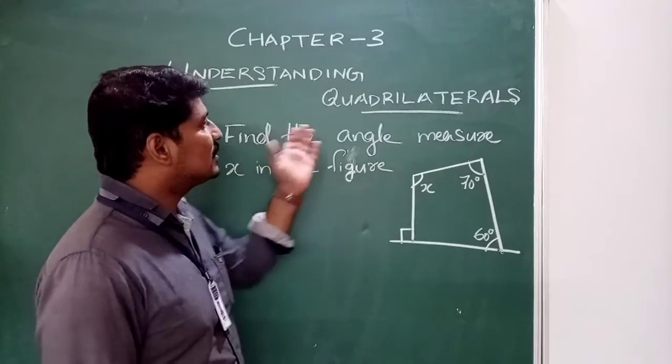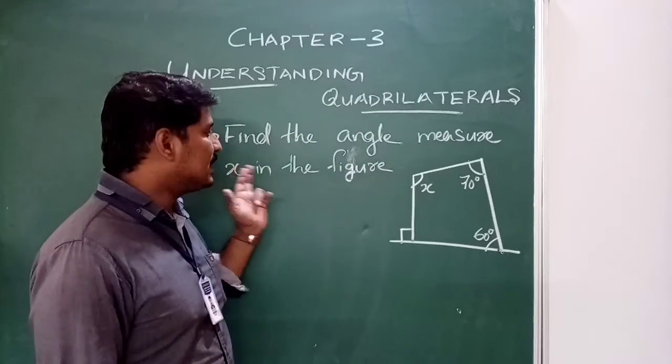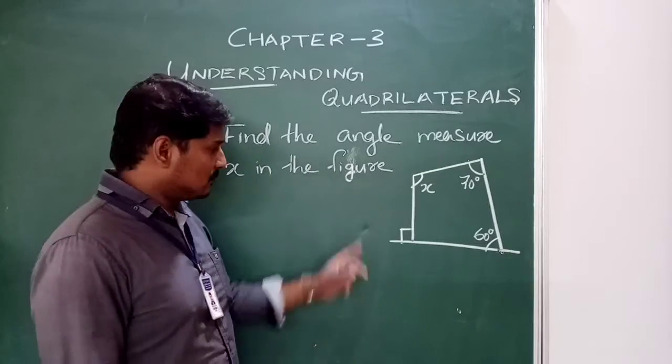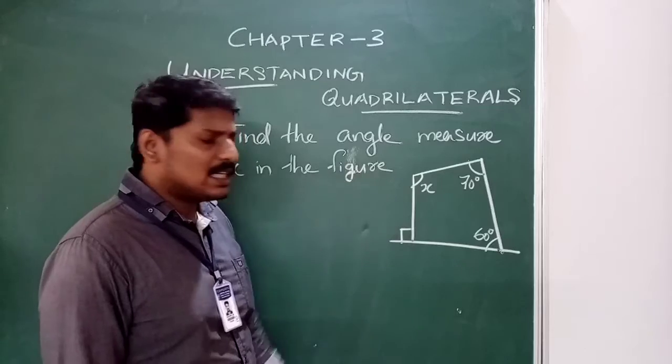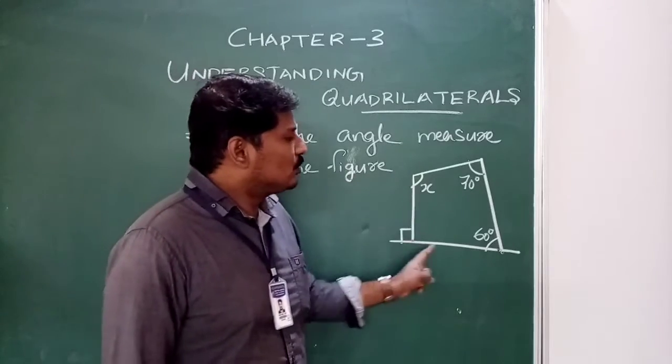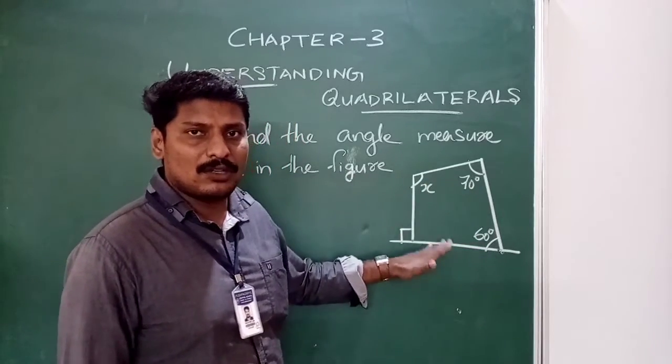So, find the angle measure x in the figure. If you can, x from the angle of angle. Okay, so now, this is the quadrilateral angle. It is 4 sides.